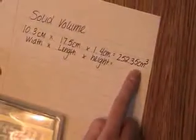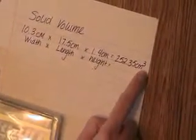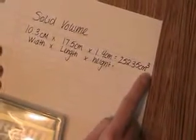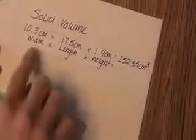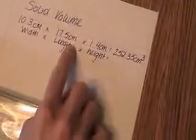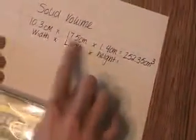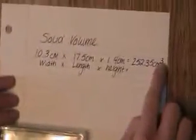Now, as you notice, I multiply them together and I get 252.35. Afterwards, I have a unit of centimeters cubed. That is because I multiplied centimeter by centimeter by centimeter — three times — so it's centimeters cubed.